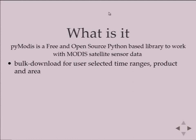MODIS data is stored by NASA in a repository with a lot of data. For people who don't know, the MODIS satellites have been up from 2000 — the first one from 2000, the second from 2002. They pass each part of the world four times a day, so each satellite passes twice over a single point, giving us four maps a day per location. To download data every day you need something to do it automatically.